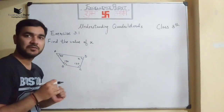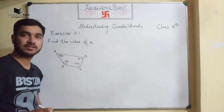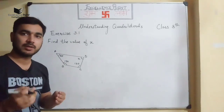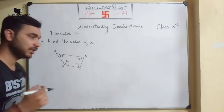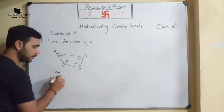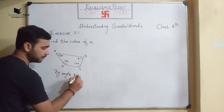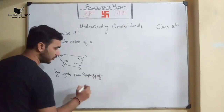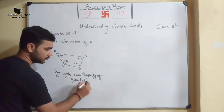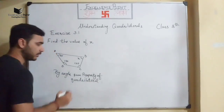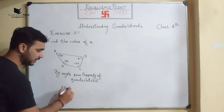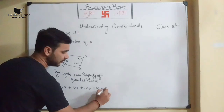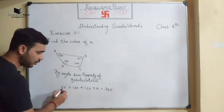In the given question, we have a quadrilateral in which three of the angles are given and one x is there which we have to find. We know that by the angle sum property of quadrilateral, the sum of angles should be equal to 360 degrees. So we will write: by angle sum property of quadrilateral.